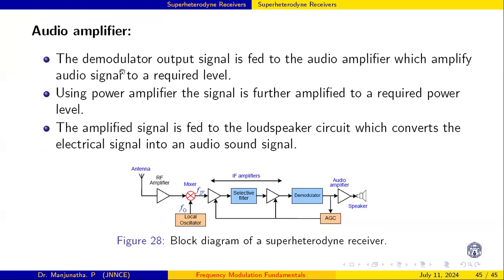Finally, the demodulated signal is fed to the audio amplifier — usually a power amplifier stage — which amplifies it to the required level. This amplified signal is then fed to the loudspeaker. This is how the superheterodyne receiver works.